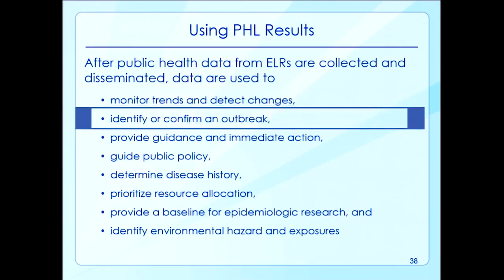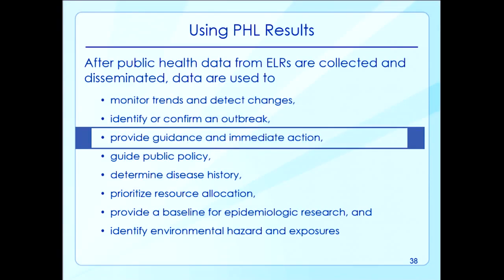Data can be used to identify or confirm an outbreak. For example, laboratories perform seasonal testing for the West Nile virus, a virus caused by mosquitoes. Testing is conducted on human specimens and mosquito pools to confirm that an outbreak is occurring or is likely to occur. After laboratory confirmation that a disease is occurring in a community, public health authorities can take immediate action by issuing guidance and control measures, such as community-wide insecticide spraying to eliminate mosquitoes or broadcasting prevention messages to the public.